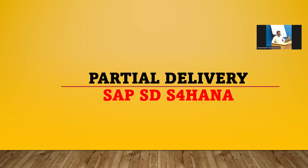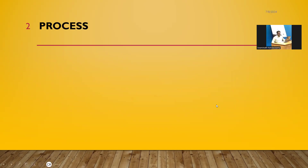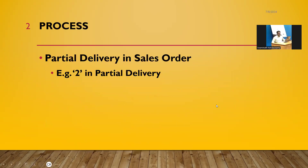Hello everybody, Swaminath here. Today we are going to see partial delivery in SAP S4. So what is partial delivery? When you are creating a sales order with quantity 5, but you want to do only 3 quantity, you can do a 3-quantity partial delivery and the remaining 2 quantity in the next delivery. That is partial delivery.